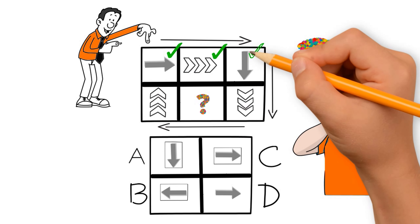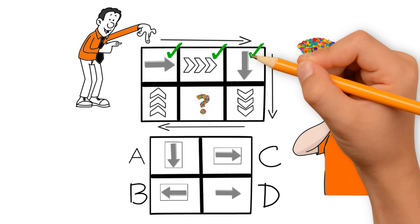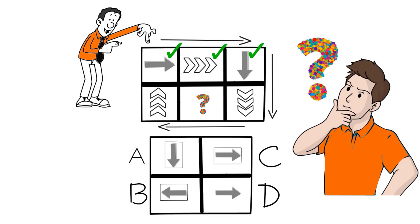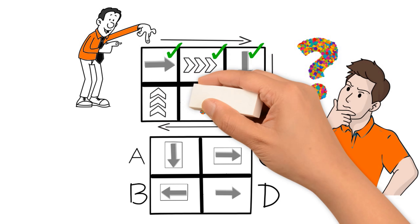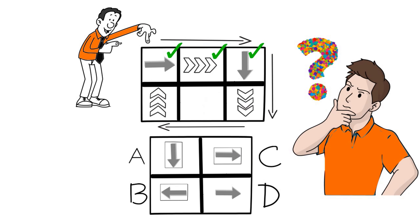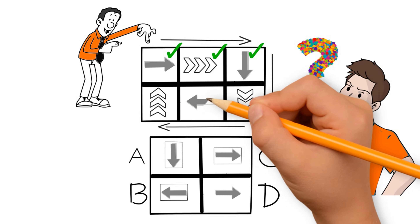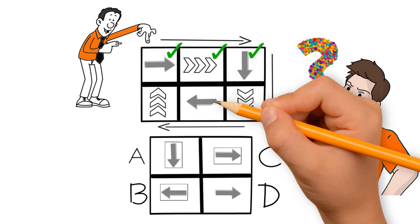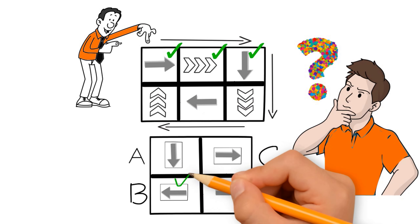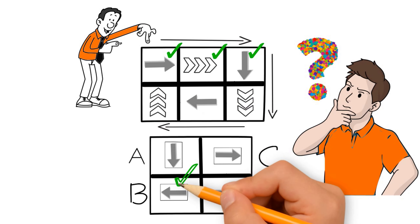The third pattern, which is a little harder to identify, is that the previous arrow points to the next arrow's start. This is why the missing part contains an arrow placed in the right corner pointing to the left. So the correct answer here is choice B.